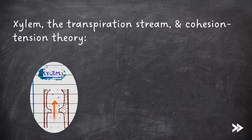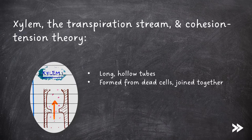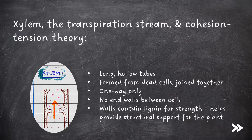The xylem forms long hollow tubes made from dead cells joined together. They are one way only and there are no end walls between cells. Their walls contain lignin for strength, which helps provide structural support to the plant.